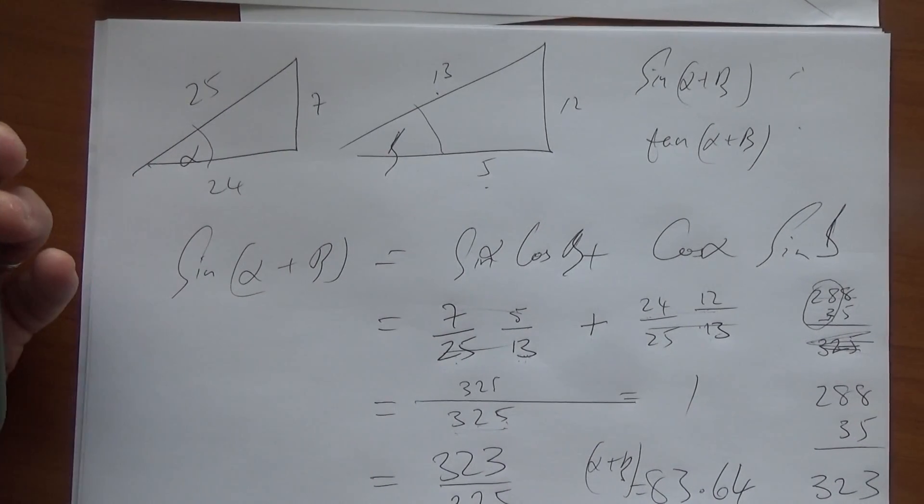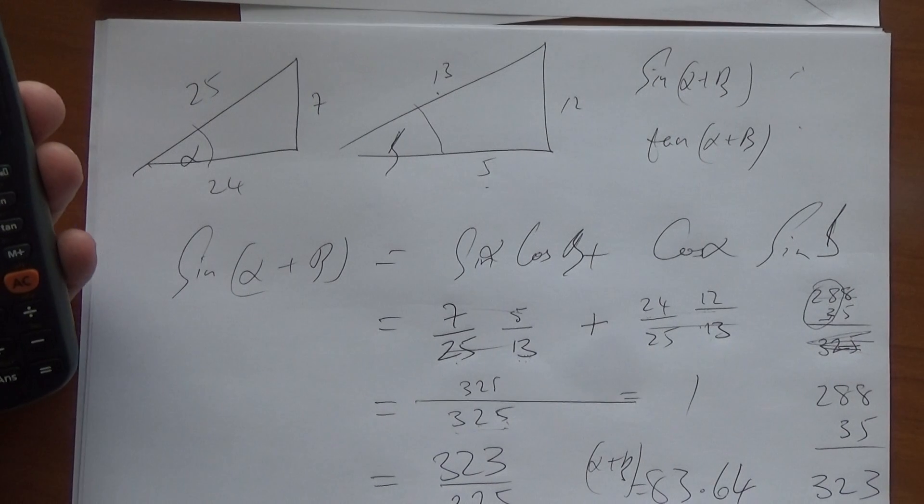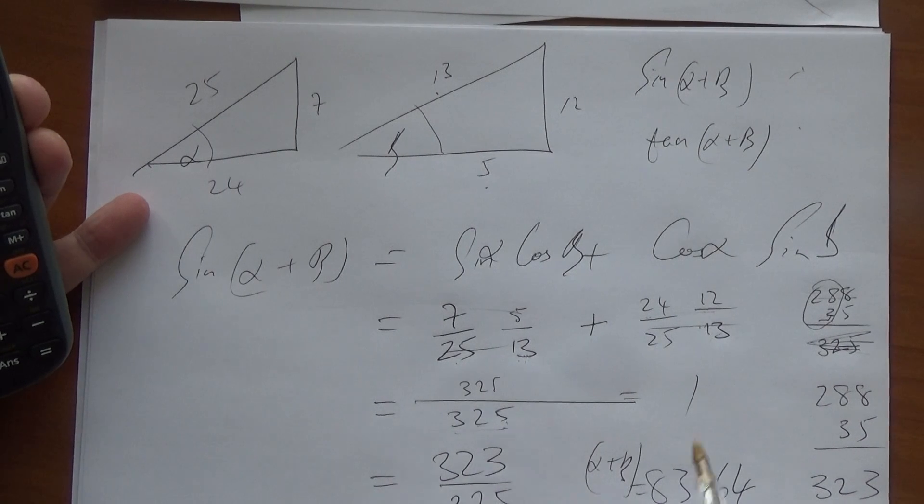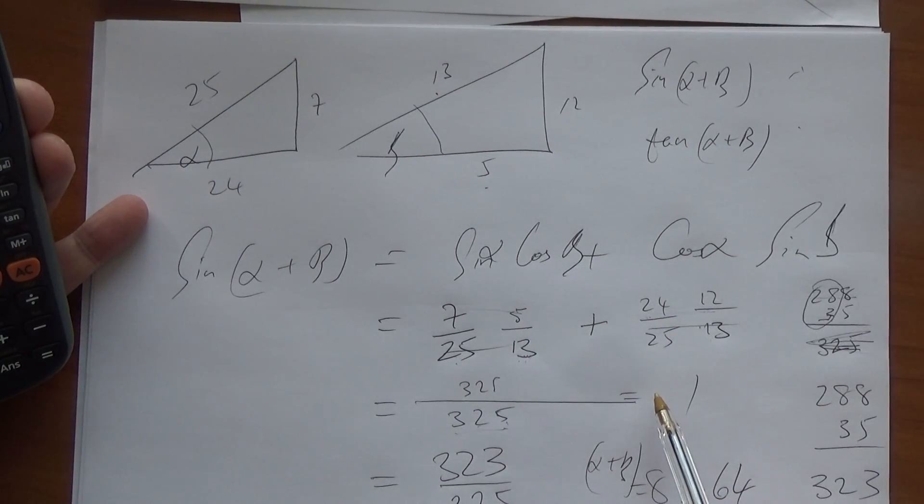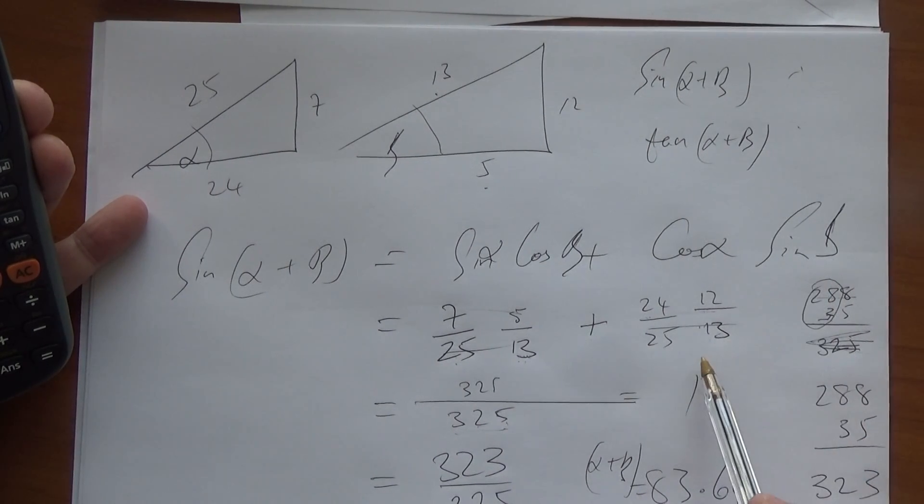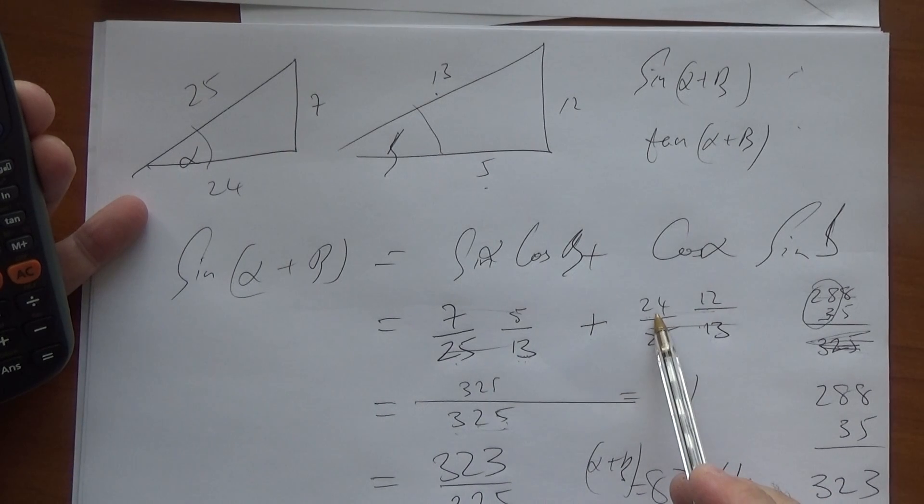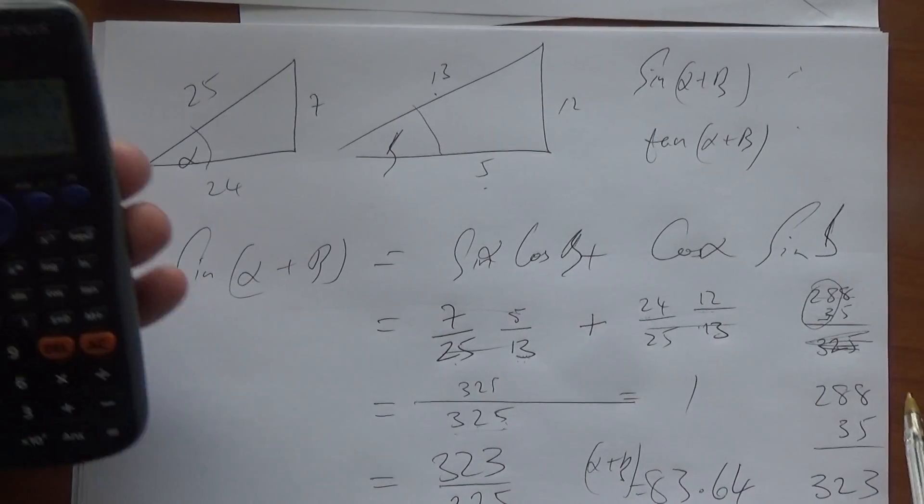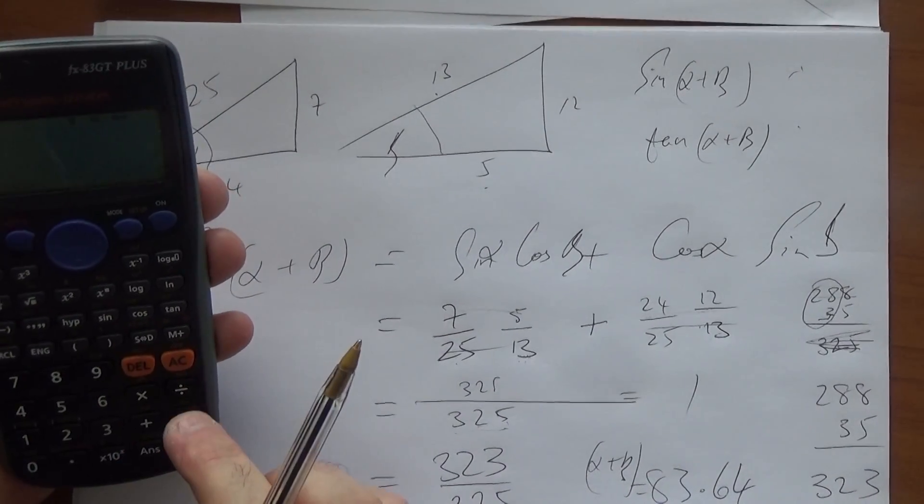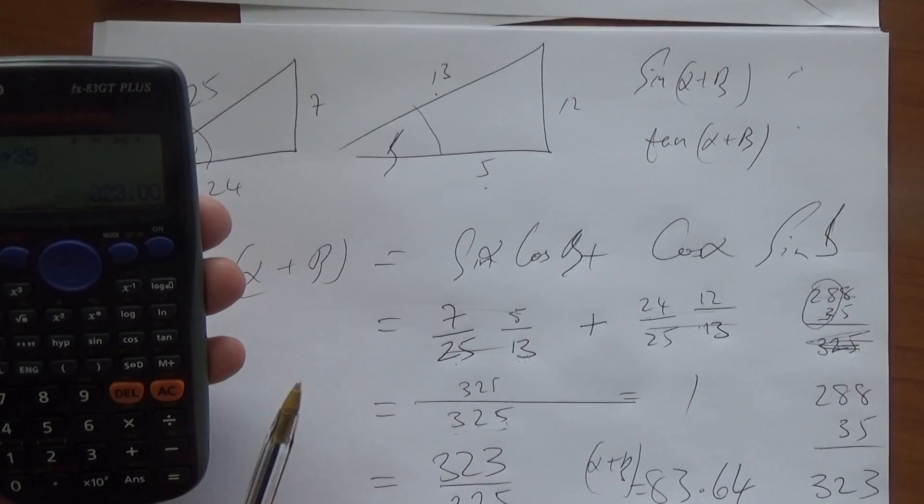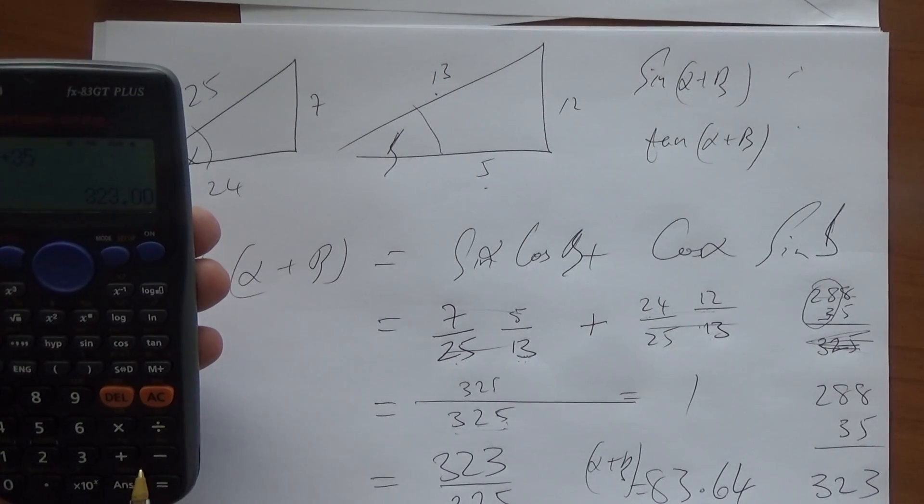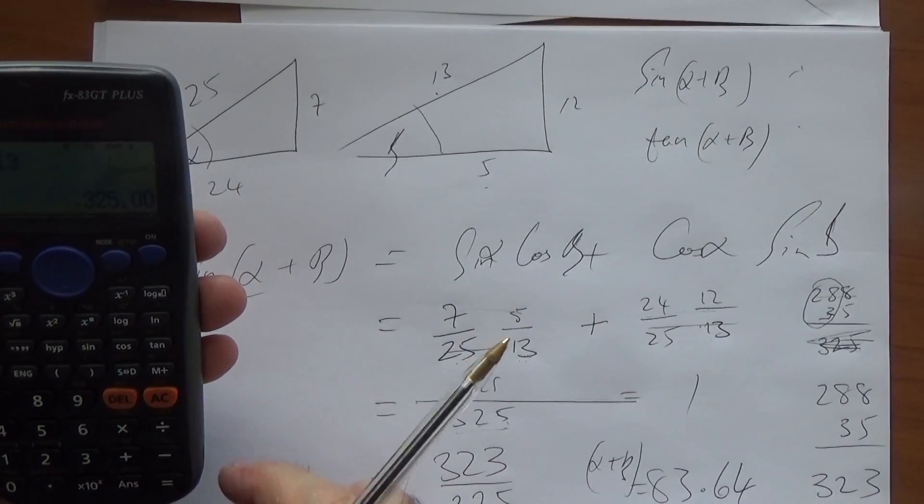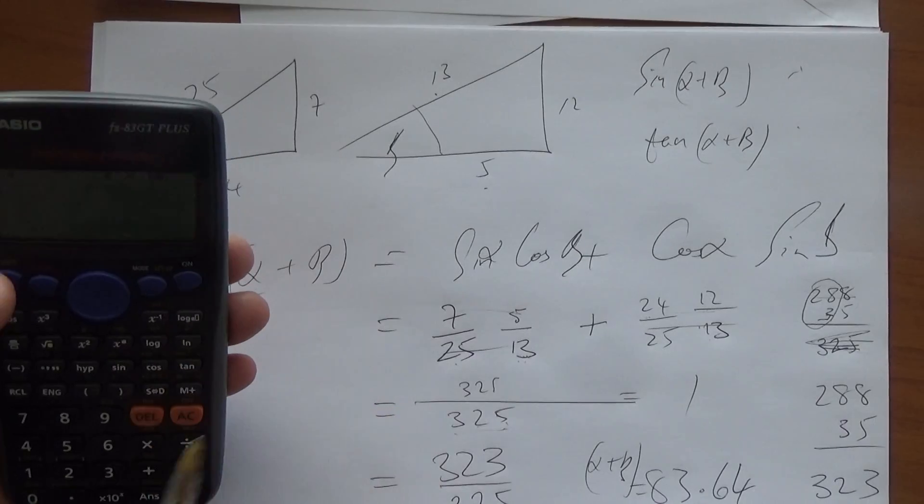But I'm not convinced that when I inverse sine this, because they're so close to each other. 24 over 25. Sine of beta, 12 over 13. 12 times 12 is 144, 288. 7 times 5 is 35. 323, 325. Okay. Inverse sine.